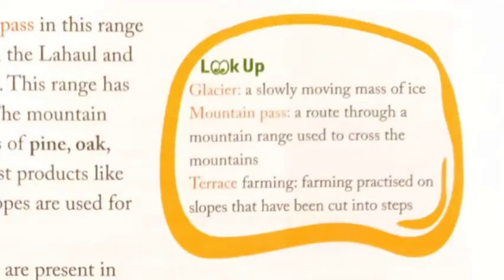Fruit orchards and tea plantations are present in this region. Therefore, unlike the Greater Himalayas, the Lesser Himalayas are well populated. Glacier means a slowly moving mass of ice. Mountain pass means a road through a mountain range used to cross the mountains. Terrace farming means farming practiced on slopes that have been cut into steps.